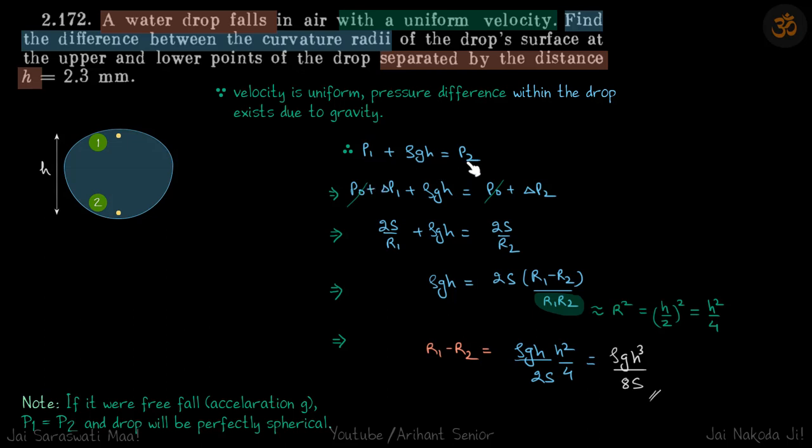So p1 plus ρgh is equal to p2. p1 is p0 plus Δp1, p2 is p0 plus Δp2. Now we can assume that the surface, if you look at this local surface, is part of a sphere. It can be a big sphere, but whatever it is, it's going to be part of a spherical surface.